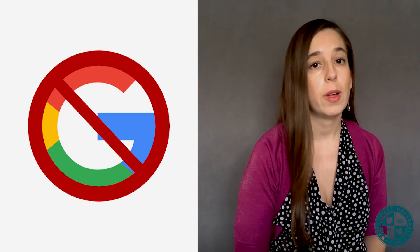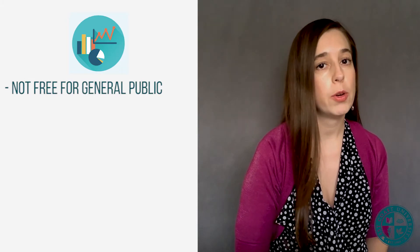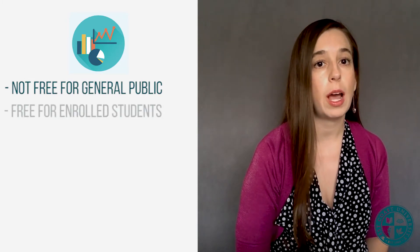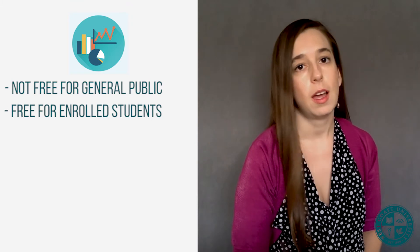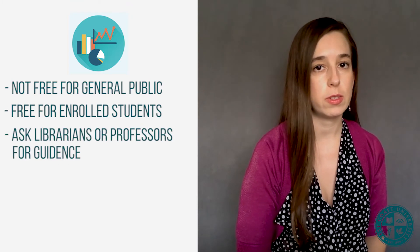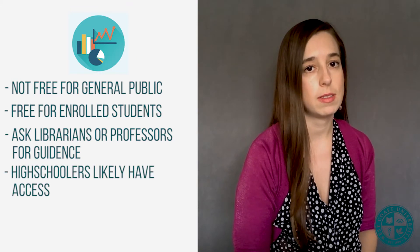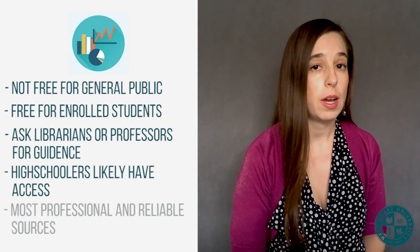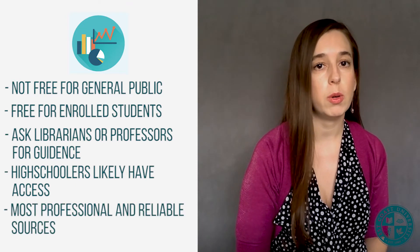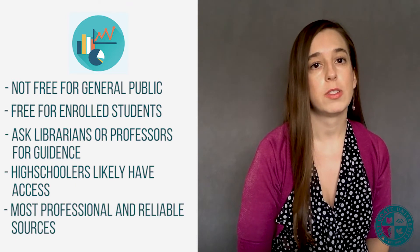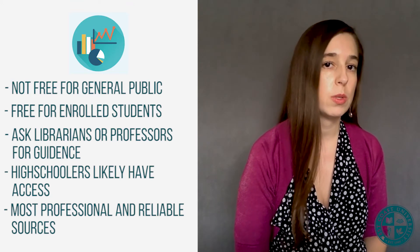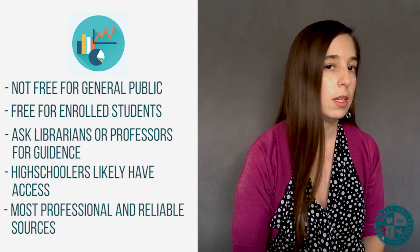The most academic and reliable sources you can find are not easy to access with a Google search. You'll want to access the library databases. These are usually not free for the general public, but if you're enrolled in college, you do have free access to these online library databases. Ask your librarian or your professors — they'll be glad to guide you to them. In fact, even as a high school student, you likely have access to some library databases. The sources found in these databases tend to be the most professional and most reliable because they're subjected to a process called peer review, which we'll talk about in much more detail in a later video of this series.